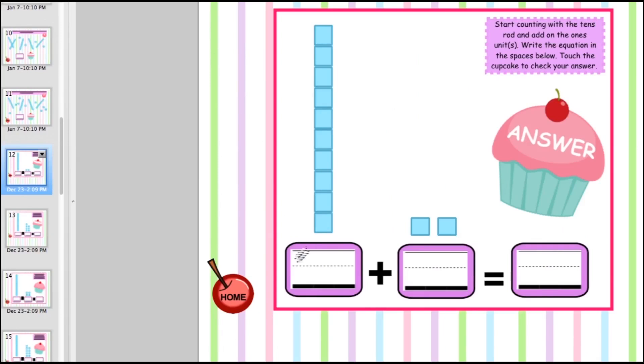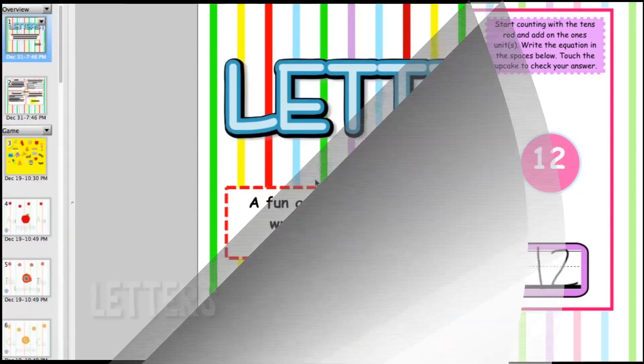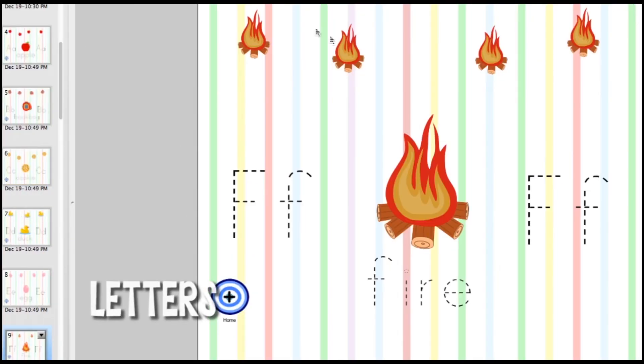In the last activity they count how many tens there are, how many ones, they add it together to get the final sum, and then they click on the cupcake to check their answer. This letters game allows students to practice writing letters and words, and there is a picture that accompanies the letter that they're working with.